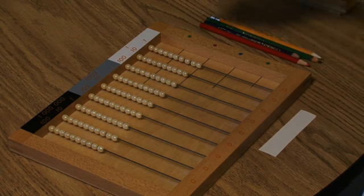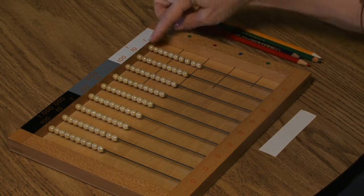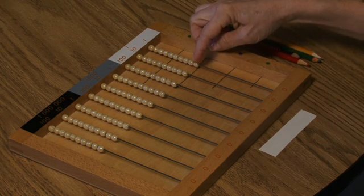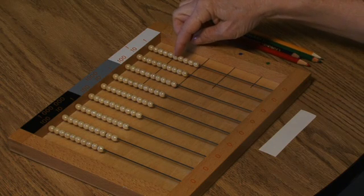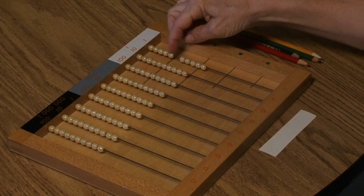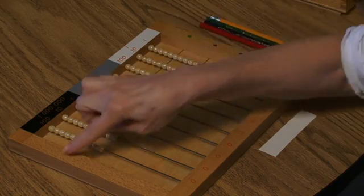So we can notice that on this bead frame all the beads are golden and there are ten sets of ten golden beads. One, two, three, four, five, six, seven, eight, nine, ten in each set.